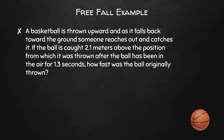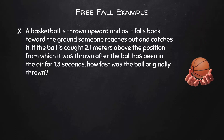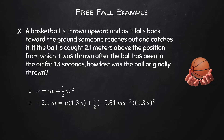A basketball is thrown upward and as it falls back toward the ground, someone catches it 2.1 meters above the position from which it was thrown, after the ball has been in the air for 1.3 seconds. How fast was the ball originally thrown? Since we don't know or need the final velocity, we use S equals UT plus one-half AT squared. The displacement is positive 2.1 meters and acceleration is negative 9.81 m/s². Solving, we find the initial velocity is positive 8 meters per second.